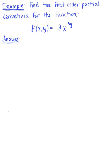Find the first order partial derivatives for the function f(xy) = 2 times x raised to the 5y. Looking at our function, we see we have two independent variables, so we will have two first order partial derivatives. This example is interesting because depending upon which partial derivative you are computing, it changes the type of function that you're differentiating.